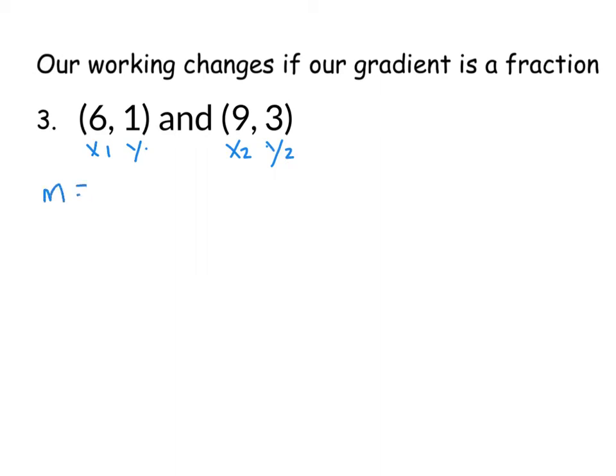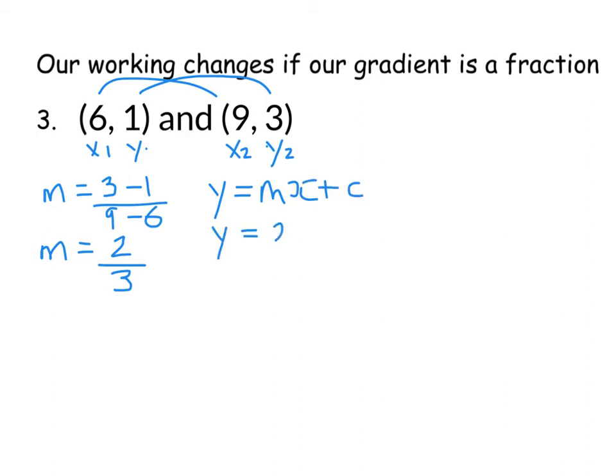So our gradient, if we subtract the y's, is three minus one on the top. And subtract your x's is nine minus six on the bottom. Three take away one is two. And nine take away six is three. That won't simplify, so my gradient is a fraction. We then write out y equals mx plus c. We put in our gradient, so y equals two thirds of x plus c.